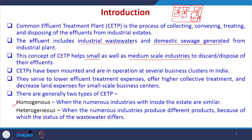There are generally two types of CETP. Homogeneous CETP, when the numerous industries within the estate are similar in nature — all member industries fall in the same sector. Heterogeneous CETP, when the industries produce different products and their wastewater effluent has different characteristics.